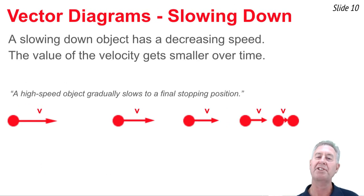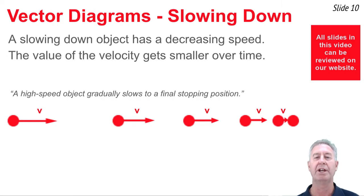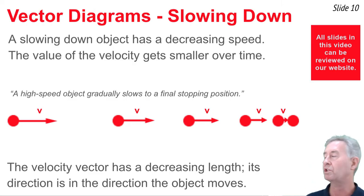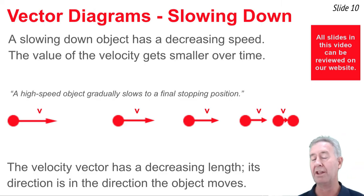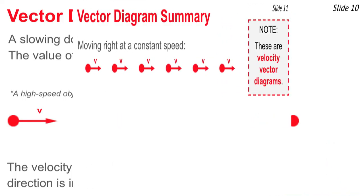Now we're going to look at the velocity vector diagram for an object that is slowing down. Such an object has a decreasing speed — the magnitude of its velocity is getting smaller over the course of time. We represent this using an arrow that gets smaller over the course of time. Its length decreases and the direction of the arrow is in the direction that the object moves.